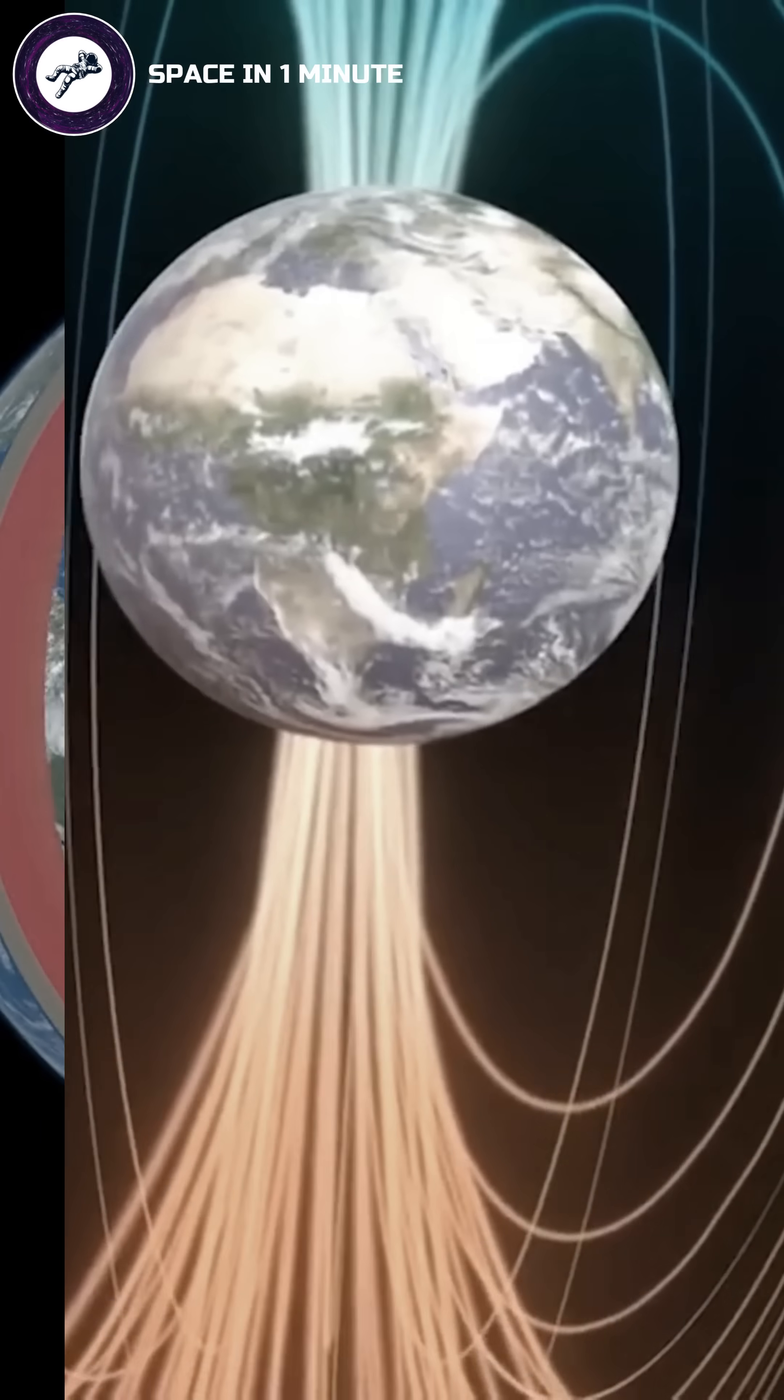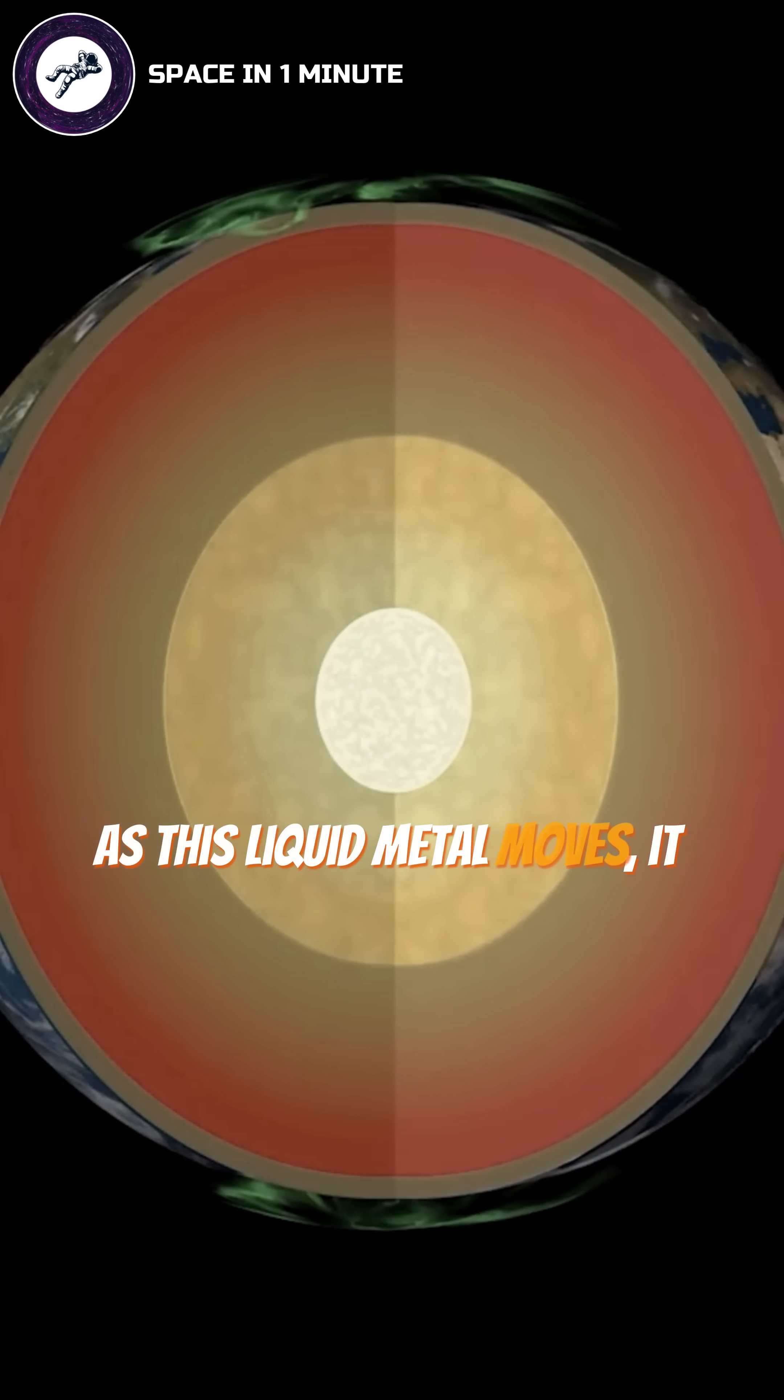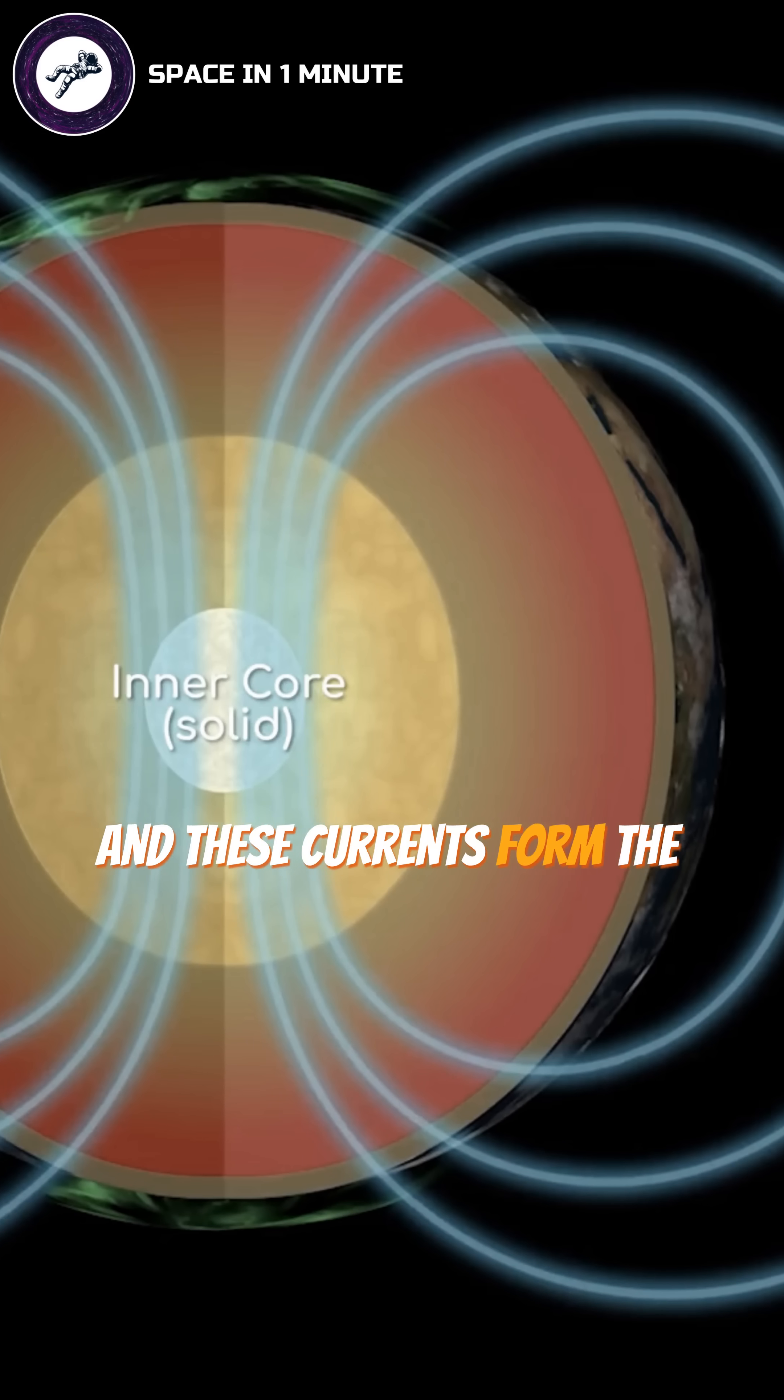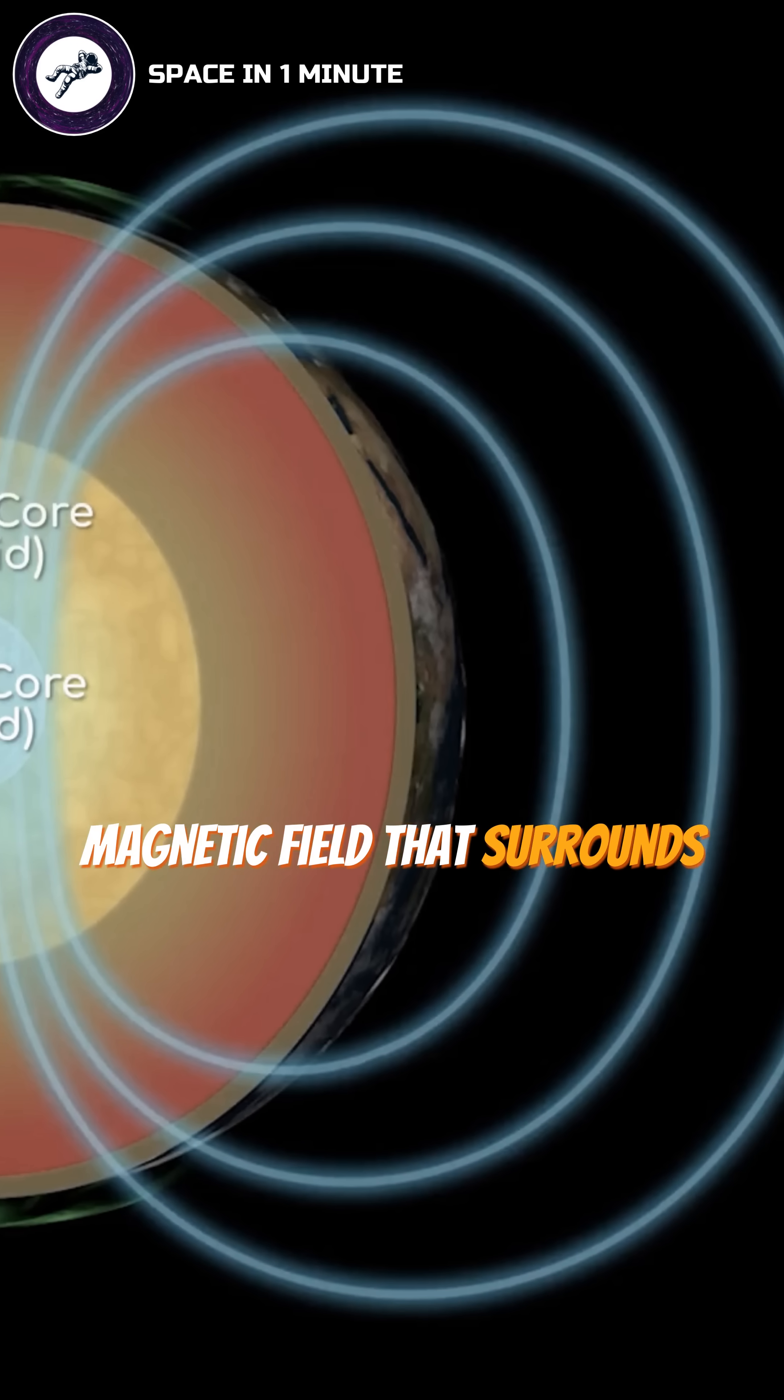But here's the mind-blowing part. As this liquid metal moves, it creates electric currents, and these currents form the magnetic field that surrounds our entire planet.